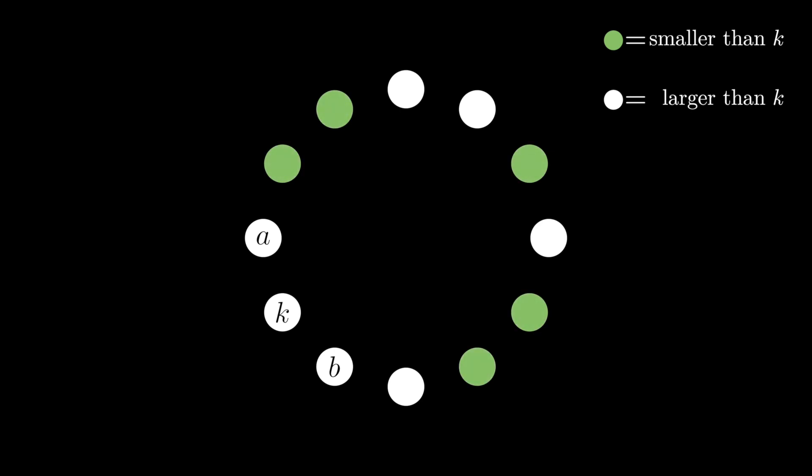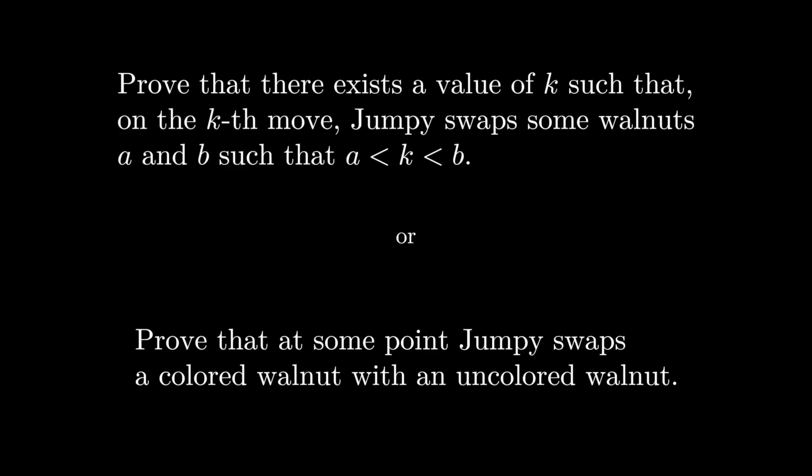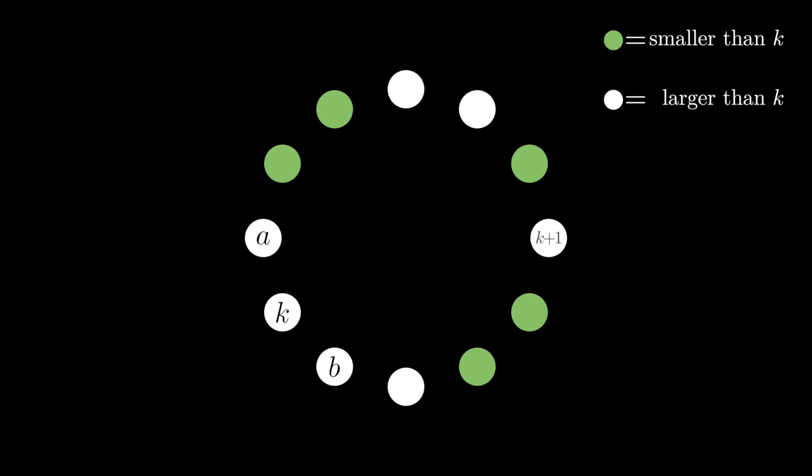So one category is all nuts that have a number that is smaller than k, and one category is all nuts that have a number larger than k. We can indicate these categories maybe by color. So let all the green nuts be those that have a number smaller than k. And then the rest of them, the white nuts, must have a number larger than k. With this approach, we can change the problem statement from finding a k, where we are swapping walnuts with a smaller and larger number, into that we have to prove that there exists a walnut, where at that walnut we are swapping a green and a white walnut, or a colored or uncolored walnut.